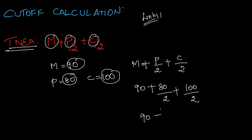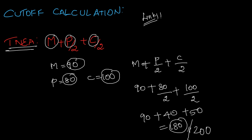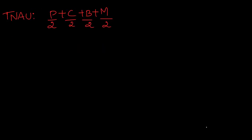90 plus 80 divided by 2 is 40, plus 100 divided by 2 is 50. So 90 plus 40 plus 50 is 180. This is the engineering cutoff. The engineering cutoff is out of 200, so max mark is divided by 1, physics mark by 2, chemistry mark by 2.